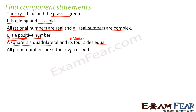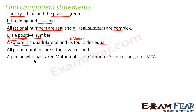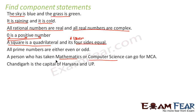Next: 'All prime numbers are either even or odd.' Here, 'all prime numbers are even' is one component statement and 'all prime numbers are odd' is another. Next: 'A person who has taken mathematics or computer science can go for MBA.' The first component statement is 'a person who has taken mathematics can go for MBA' and the second is 'a person who has taken computer science can go for MBA.' Next: 'Chandigarh is the capital of Haryana and UP.' The components are 'Chandigarh is capital of Haryana' and 'Chandigarh is capital of UP.'